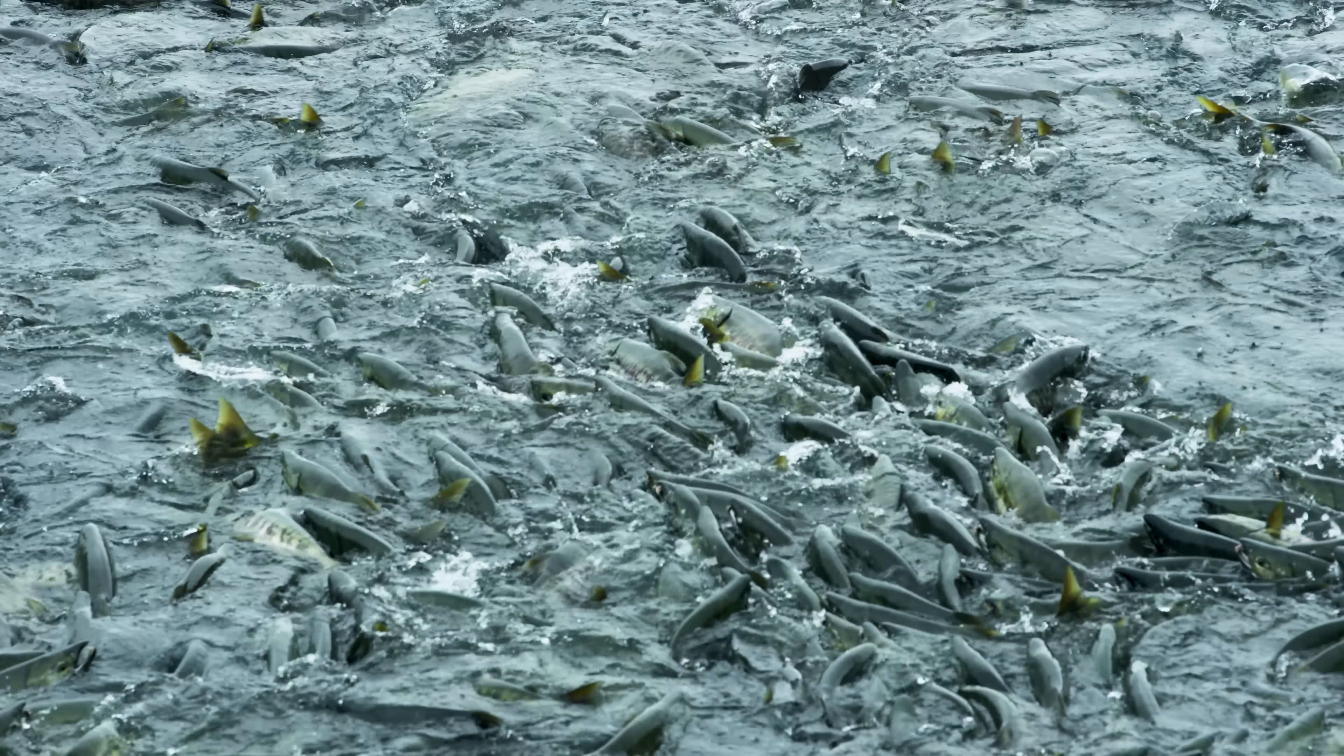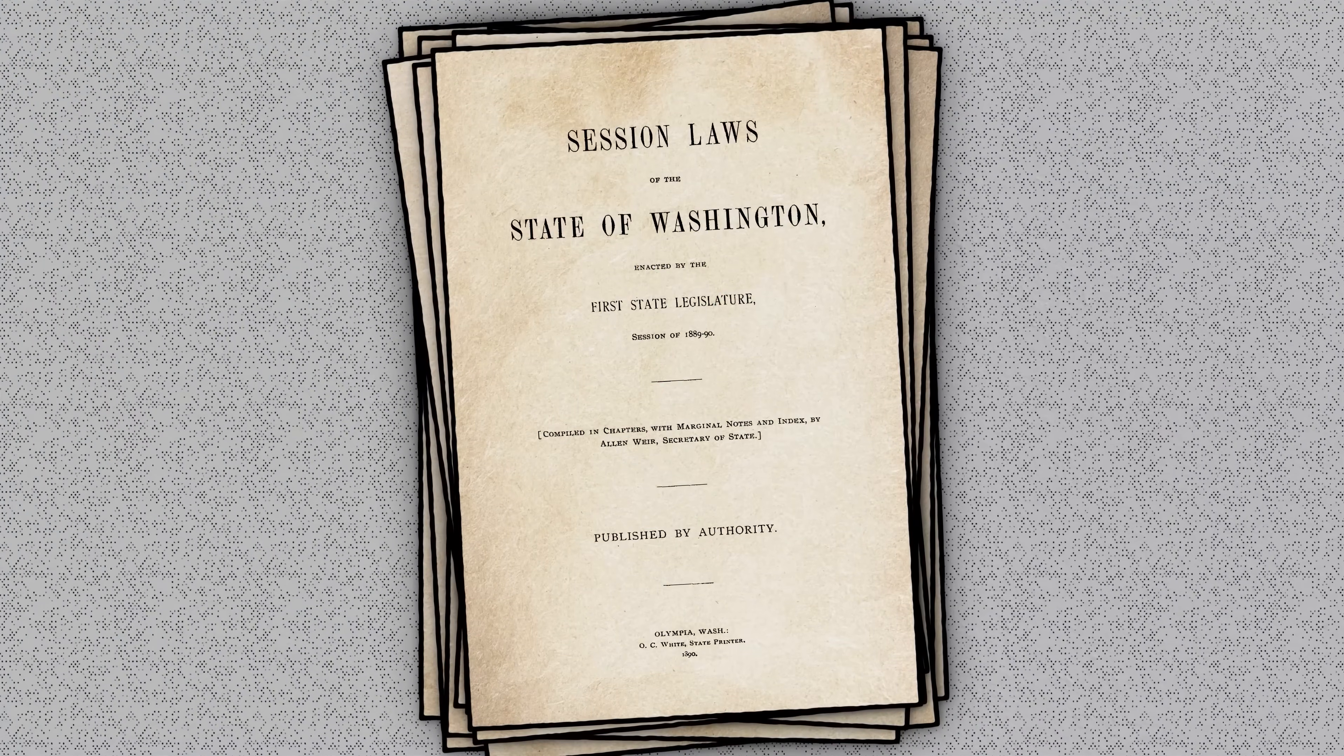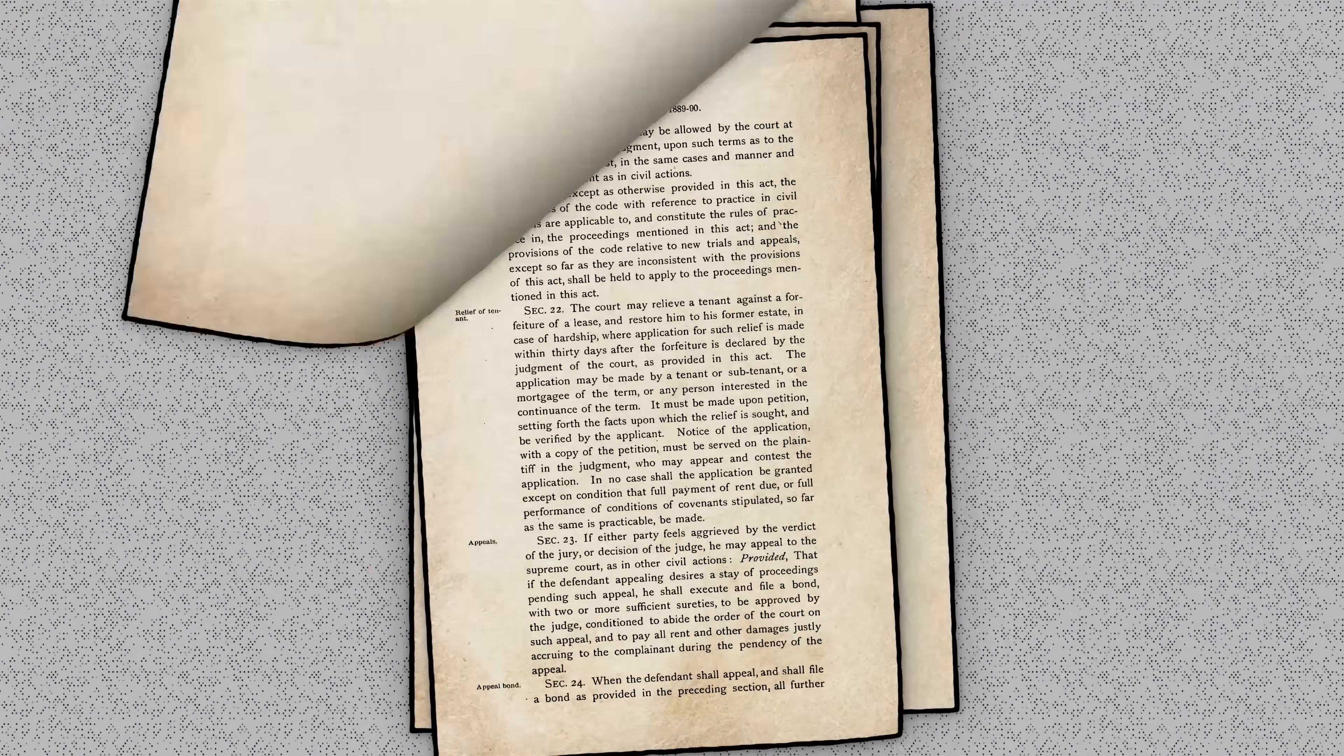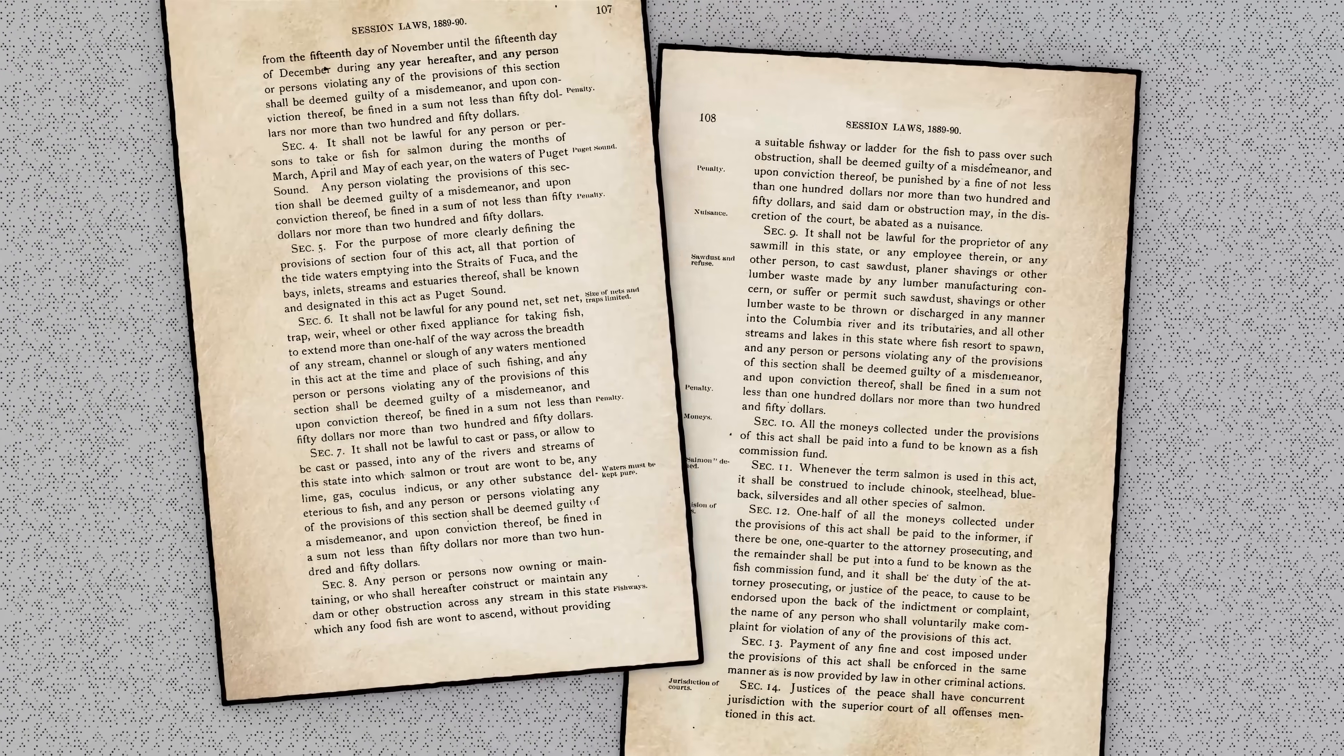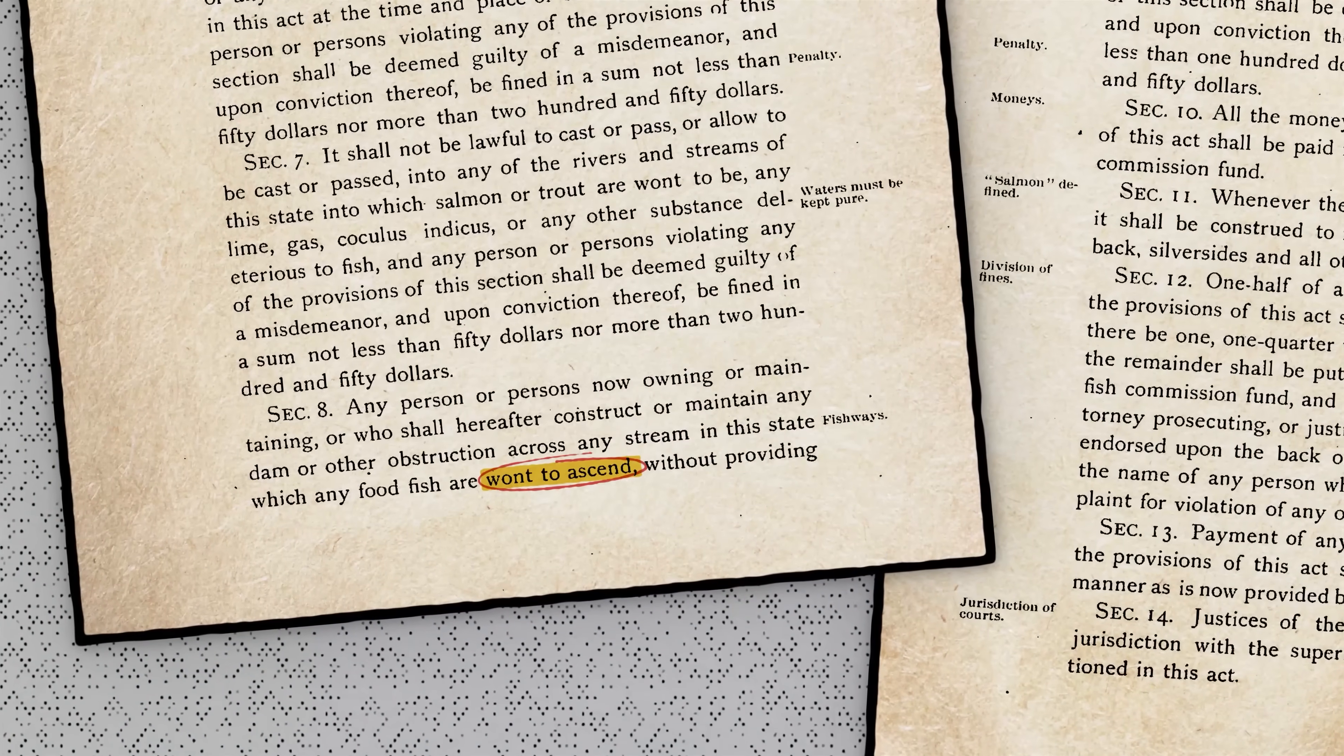But we've known for a long time, probably since we started building dams in the first place, that many of the losers are fish, especially migratory fish, through fragmentation of their habitat. Even in 1890, the state of Washington and the US had laws on the books requiring consideration of fish when building dams. And not just consideration, but specific infrastructure that would allow fish around a dam if they were quote-unquote want to ascend.